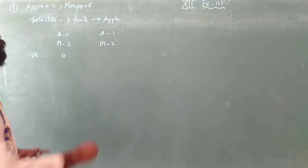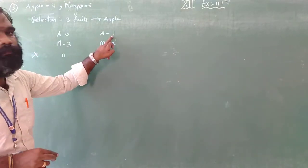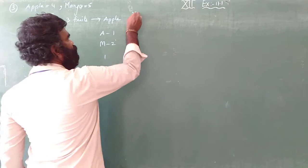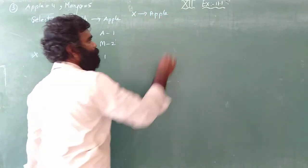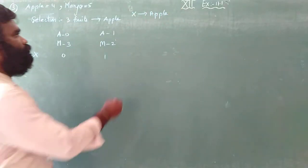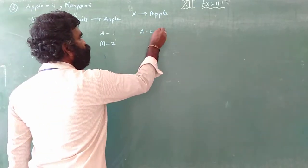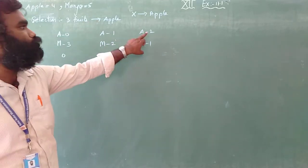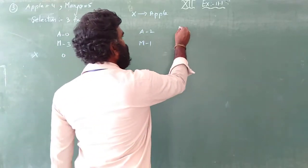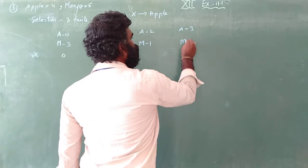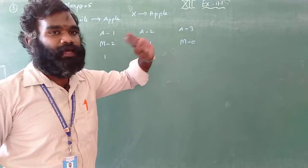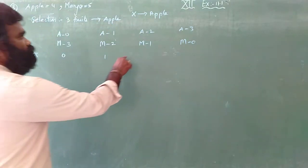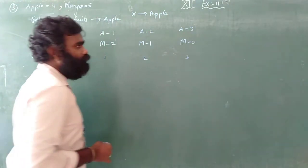1 apple and 2 mangoes — because x is a random variable, x takes the apple value. Next step: I am going to take 2 apples, so mangoes should be 1, because 2 plus 1 is 3 fruits. Then 3 apples but mangoes should be 0 — so I need to put 3 apples.